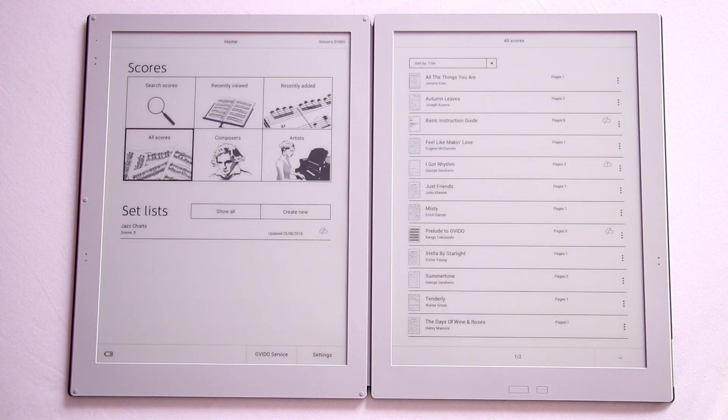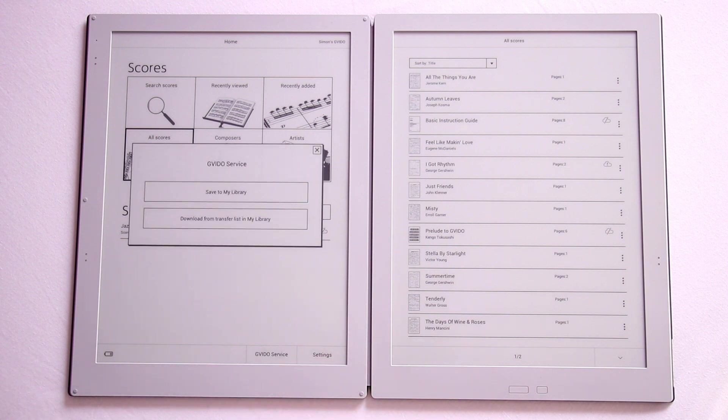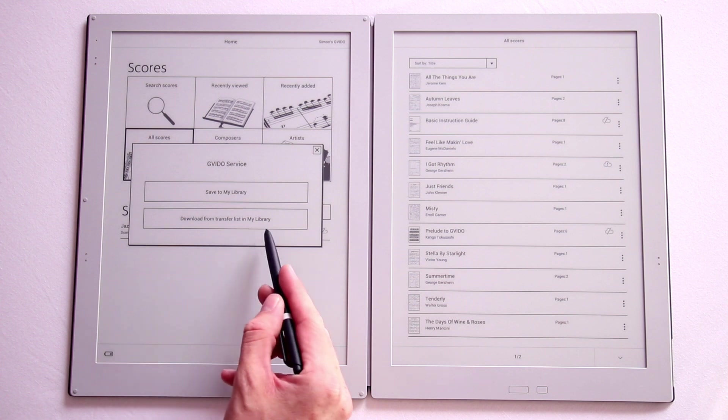To import new music onto the device is really easy. You basically do it all on your computer and you can either upload any PDF file or download any sheet music from the Guido store, which integrates really well with the device. Then you can just open this up and click download from my transfer list and it does it all through Wi-Fi and it's really quick and easy.